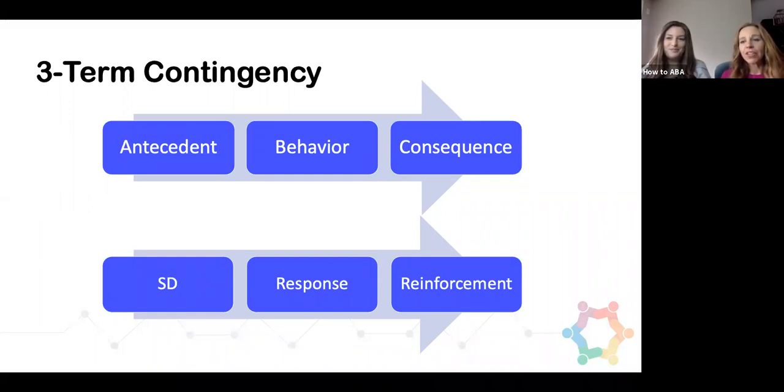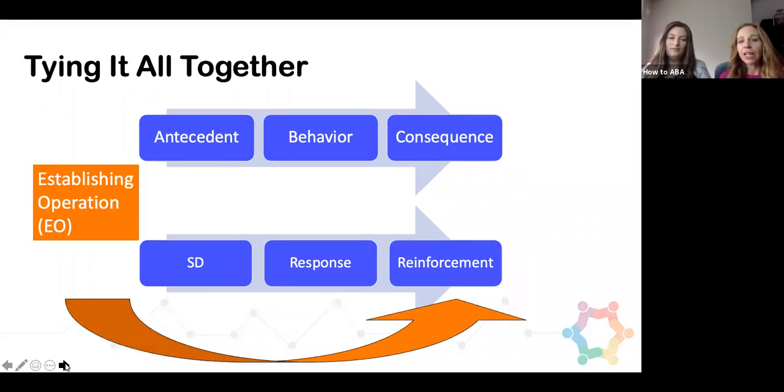Now, some people talk about this fourth-term contingency. What's that fourth contingency? It's what we refer to as an establishing operation. Because ABA people like acronyms, we always call it the EO. Sometimes you've heard of it called the MO, which is the motivating operation, using those terms interchangeably, typically.